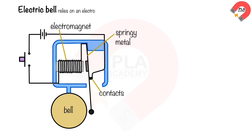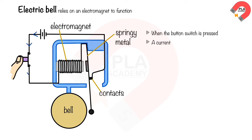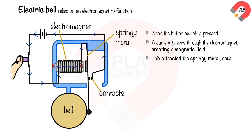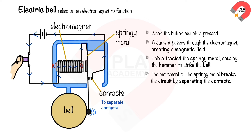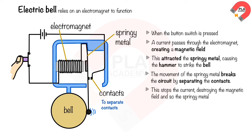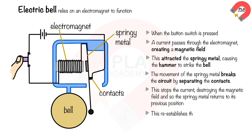Electric bell: an electric bell relies on an electromagnet to function. When the button switch is pressed, a current passes through the electromagnet, creating a magnetic field that attracts the springy metal, causing the hammer to strike the bell. The movement of the springy metal breaks the circuit by separating the contacts, stopping the current and destroying the magnetic field, so the springy metal returns to its previous position. This re-establishes the circuit and the whole process starts again.